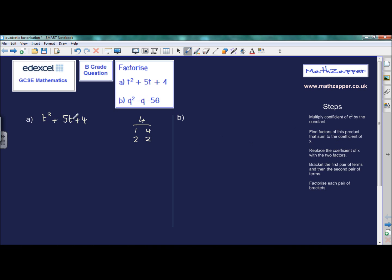When we've found the factors, we need to find the pair that sum to the coefficient of x. As we said, x is equal to t in this case. So we're looking for the coefficient of t, which is 5. And the pair that sum to 5 are 1 and 4.